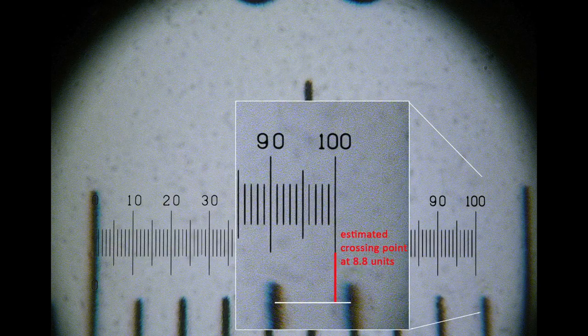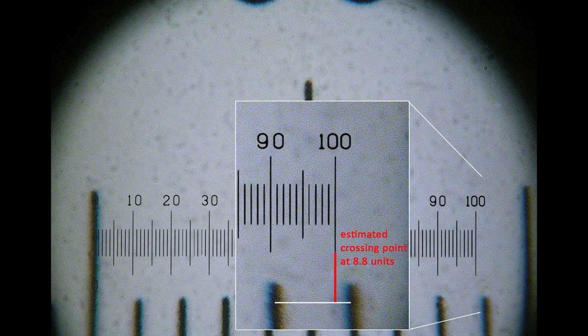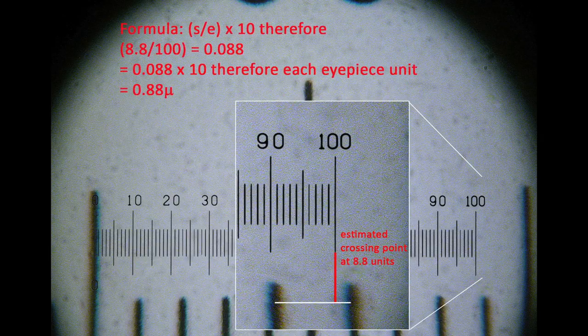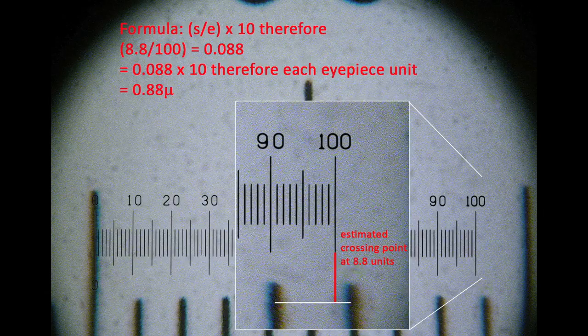So the formula is again applied using this number, and then the value for each IP unit when using this 100x objective is 0.88 microns.